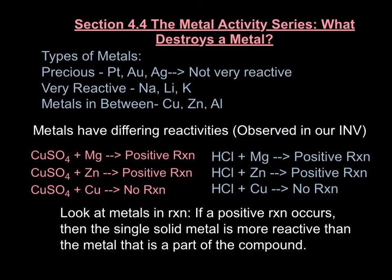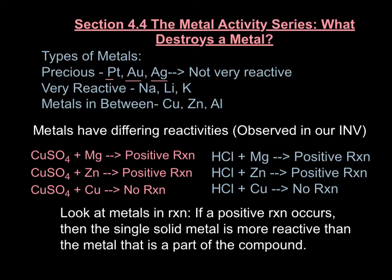Before we start talking about the Metal Activity Series and what metal reacts with, we first need to talk about the different types of metals. One class of metals are metals that are not very reactive — these are our precious metals: platinum, gold, and silver. These are usually what jewelry are made out of. We've chosen these materials because they're not very reactive, meaning we can wear gold necklaces or gold rings in many different environments, and that gold will stand the test of time because it isn't very reactive.